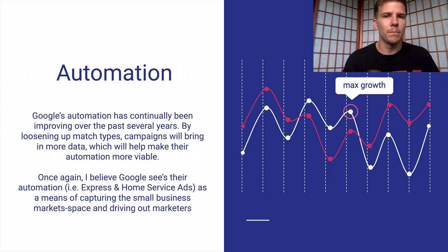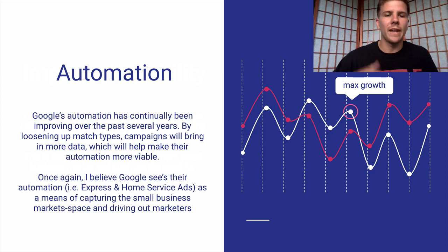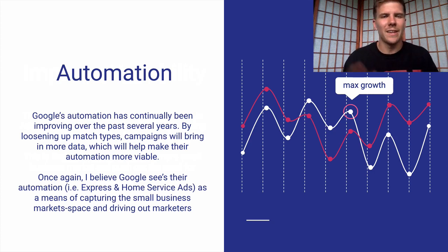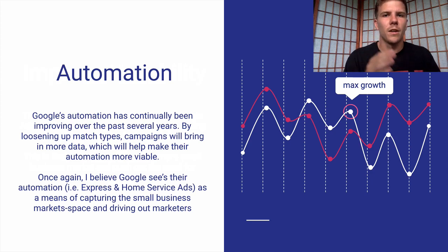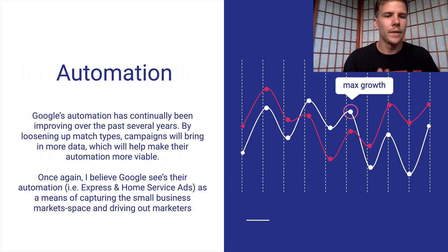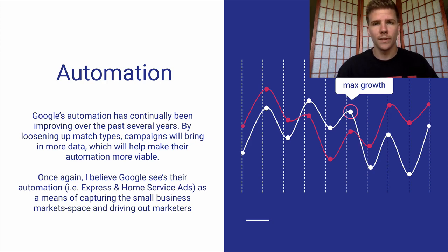Also, automation. Google's automation has been continually improving over the past several years. By loosening up the match types, campaigns and ad groups are going to bring in more data than before, which is going to help make automation more viable for local businesses. Because right now, with a local business, they don't bring in enough data or leads to justify using a bid optimization strategy such as Target CPA — there's just not enough actions taking place for the system to spot patterns. Over the past several years, Google has displayed patterns of trying to capture more market space with the small business sector — this is apparent with Google Express and Home Service Ads, which are managed services Google offers. I don't see this changing; I see it continually increasing over the next several years.